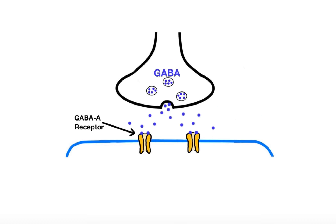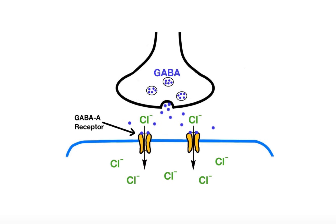When two GABA molecules bind to the GABA receptor, a conformational change is induced, which results in opening of the central pore that allows negatively charged chloride ions to rush into the cell. This in turn increases the negative charge inside the post-synaptic cell, which makes it more difficult for an excitatory input to cause an action potential.